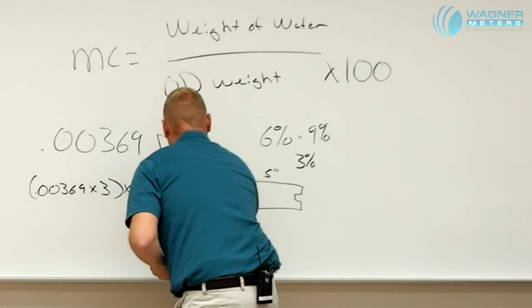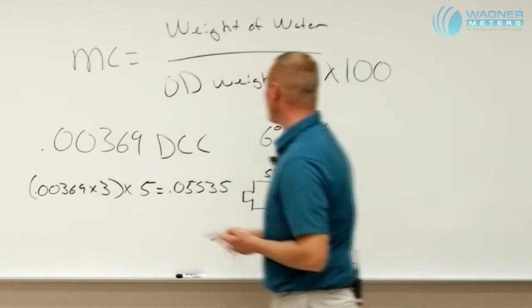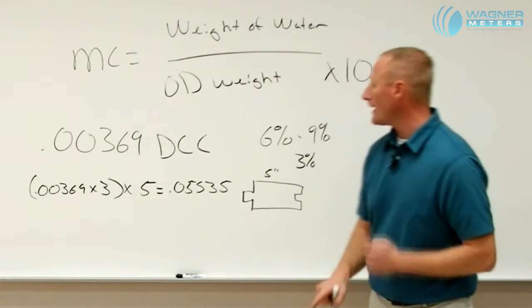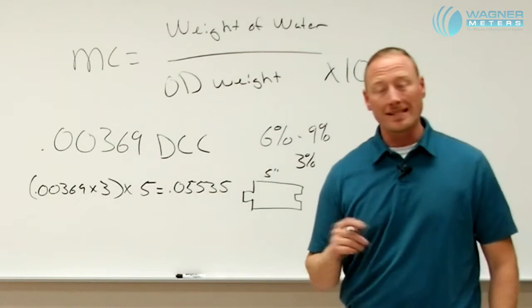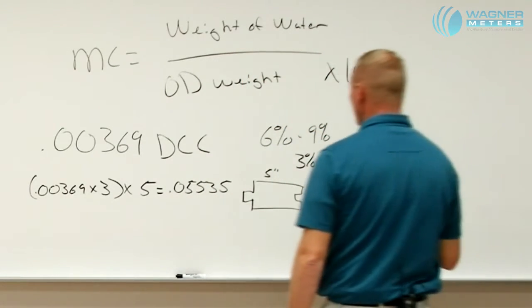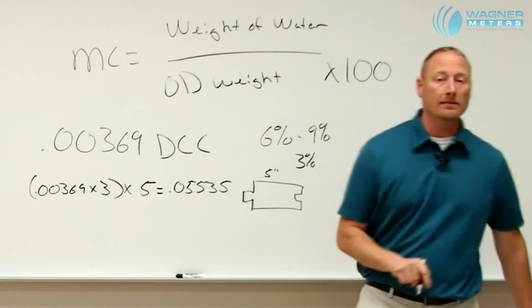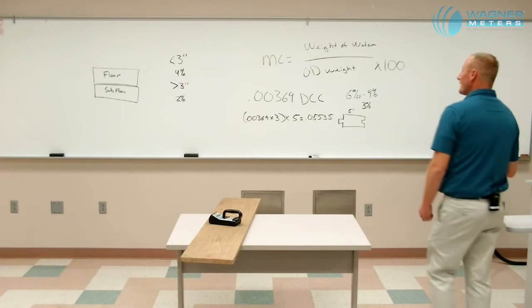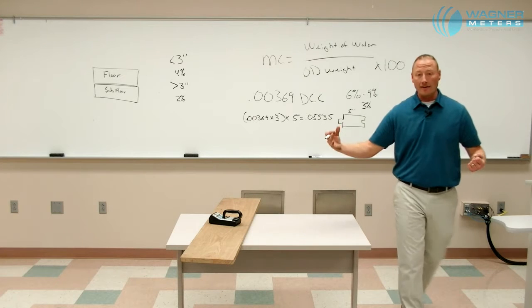So what that gives us is 0.05535, meaning that that piece of material with a change of 3% humidity at 5 inches wide will actually change 0.055 of an inch, which is slightly less than 0.16 of an inch, meaning that from winter to summer, that piece is going to increase almost 0.16 of an inch. So that way we can help determine how much we need to allow for expansion and contraction of that flooring.